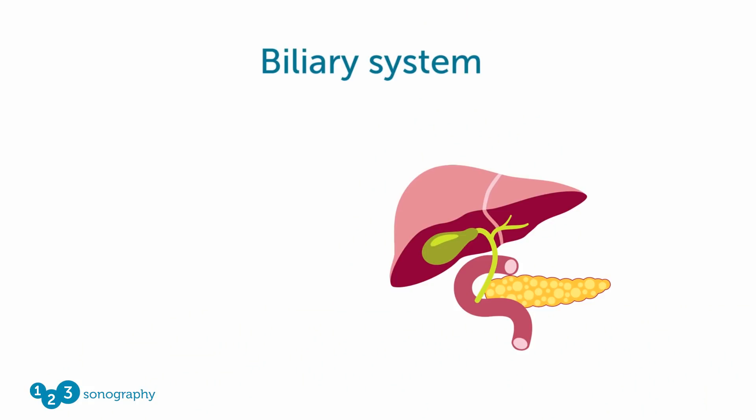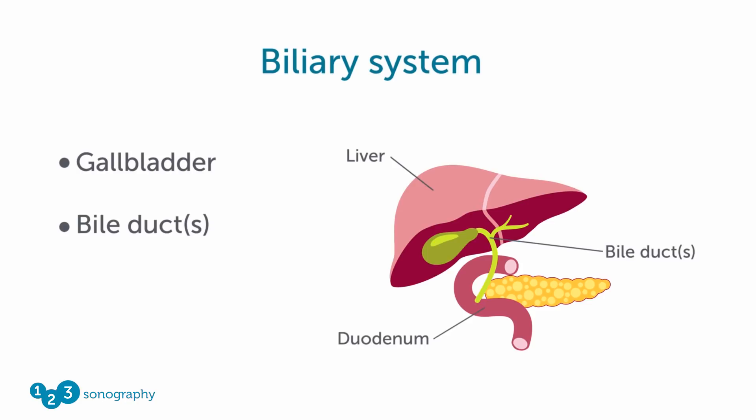But today, our lecture will cover the biliary system. The biliary system consists of the gallbladder and the large bile ducts. The bile fluid is produced in the liver and sent via the bile duct into the duodenum, where it is essential for our nutrition process. Abdominal pain can come from the gallbladder, biliary system, and other systems.